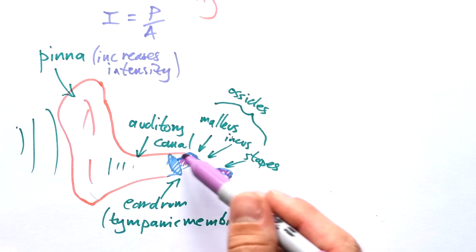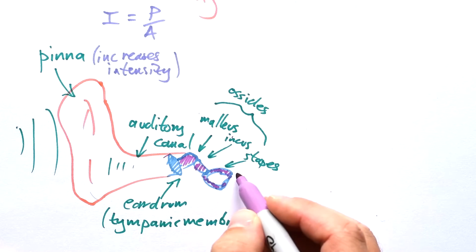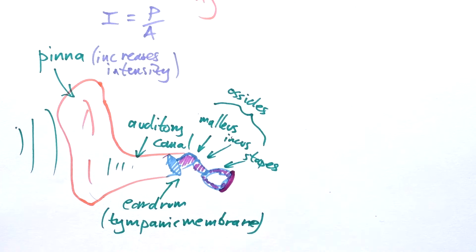These transfer vibrations from the eardrum to the next part. The ossicles also amplify the vibrations and amazingly they sort of act as an anti-reflection device as well, because sound waves could be echoed back. The ossicles reduce that effect.